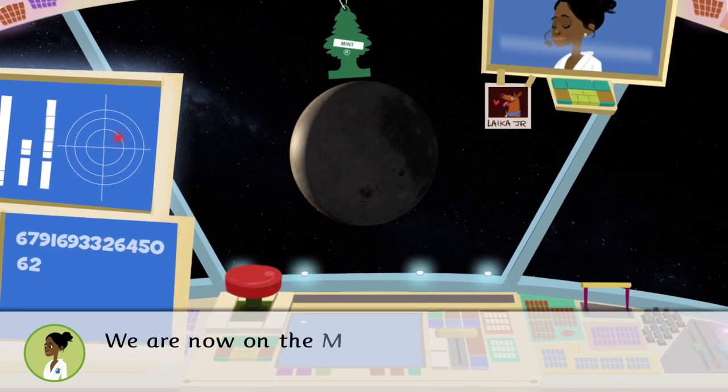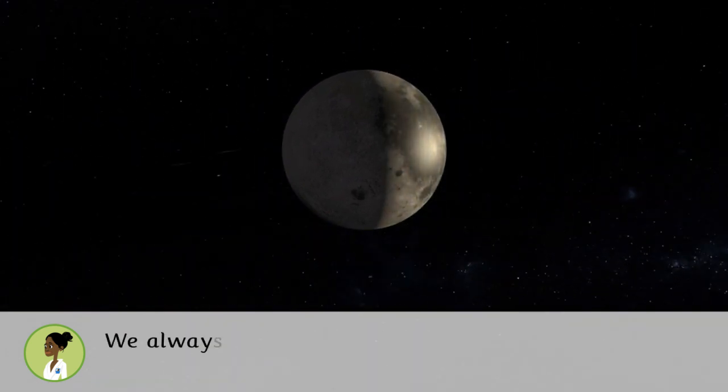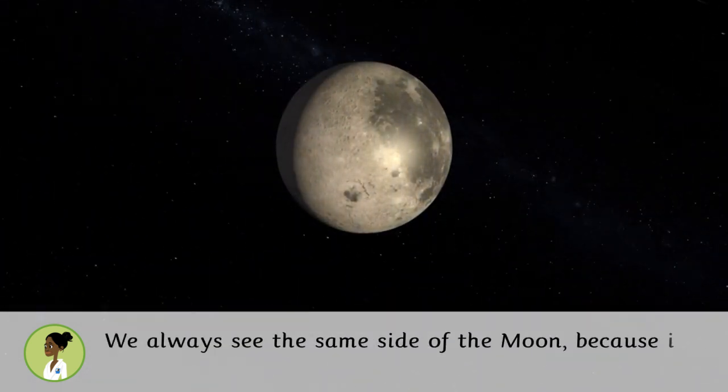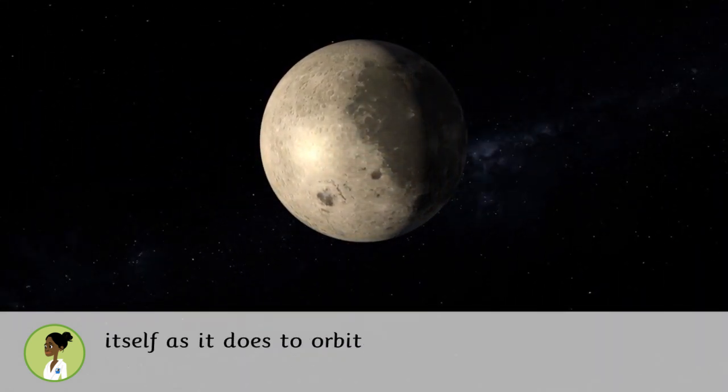We are now on the Moon, the only natural satellite that belongs to the planet Earth. We always see the same side of the Moon because it takes the same amount of time to rotate around itself as it does to orbit the Earth.